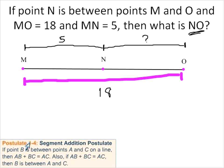And we can use the segment addition postulate to answer this question. We know that this segment, MN plus NO is equal to the full distance. Or in other words, 18 minus 5 will give us our question mark.